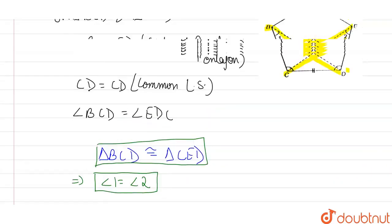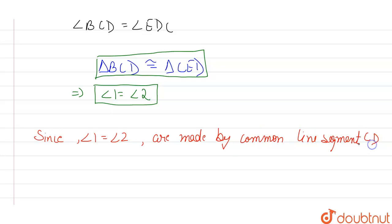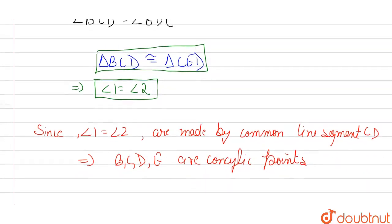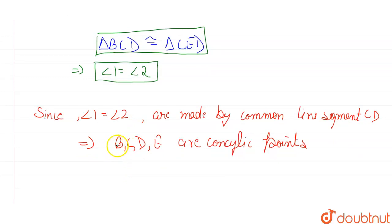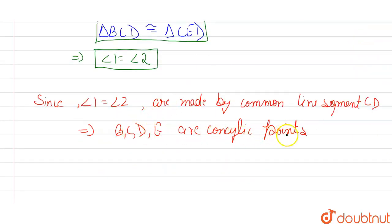Since angle 1 equals angle 2, and both are made by the common line segment CD, we can say that points B, C, D, and E are concyclic. This is because there is a theorem which states: if a segment joining two points subtends equal angles at two other points on the same side of that segment, then all four points are concyclic. Here, CD subtends equal angles — angle 1 and angle 2 — at points B and E respectively, which proves that B, C, D, and E are concyclic points.